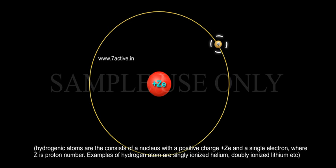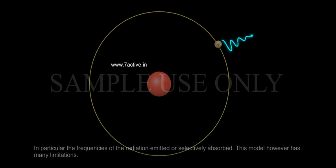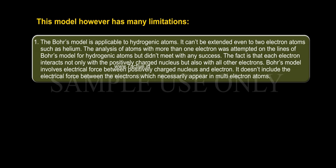Examples of hydrogen atom are singly ionized helium, doubly ionized lithium, etc. In particular, the frequencies of the radiation emitted are selectively absorbed. This model however has many limitations.